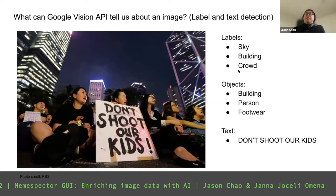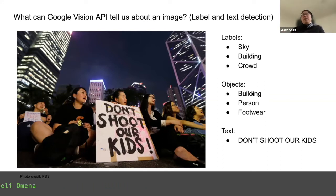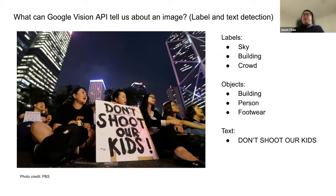There might be some confusion: you have two things here — labels and objects. Generally, labels describe what is in the picture in general terms, while objects refer to discrete, precise objects identified inside the image. Google Vision API not only gives you the name of the object but also a bounding box showing where that particular object is located in the image. This location information can be very useful.